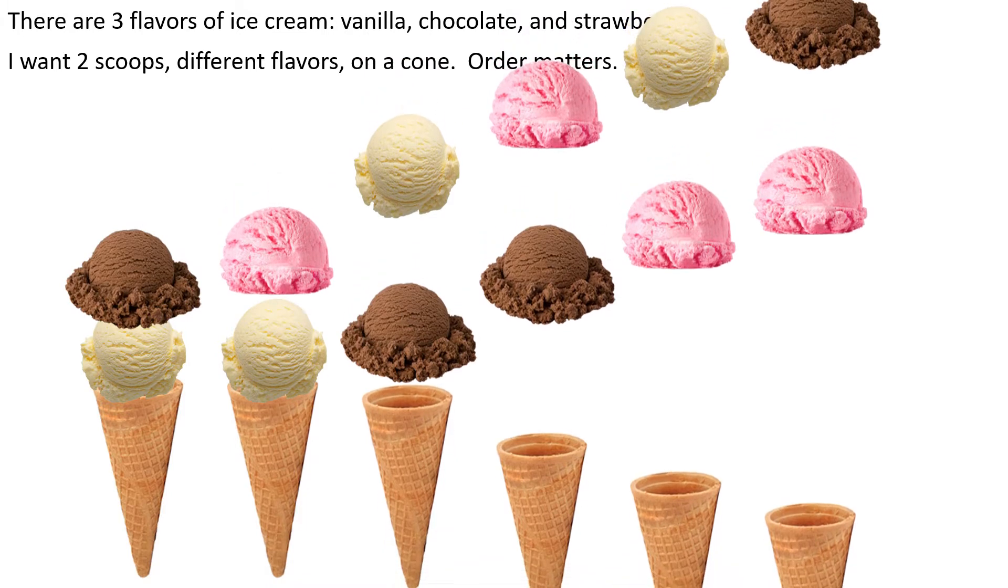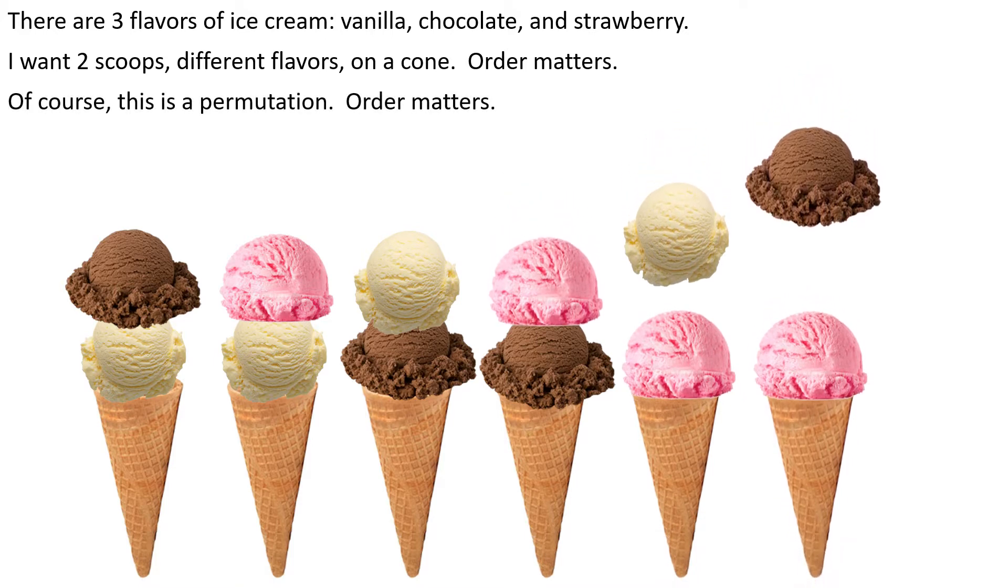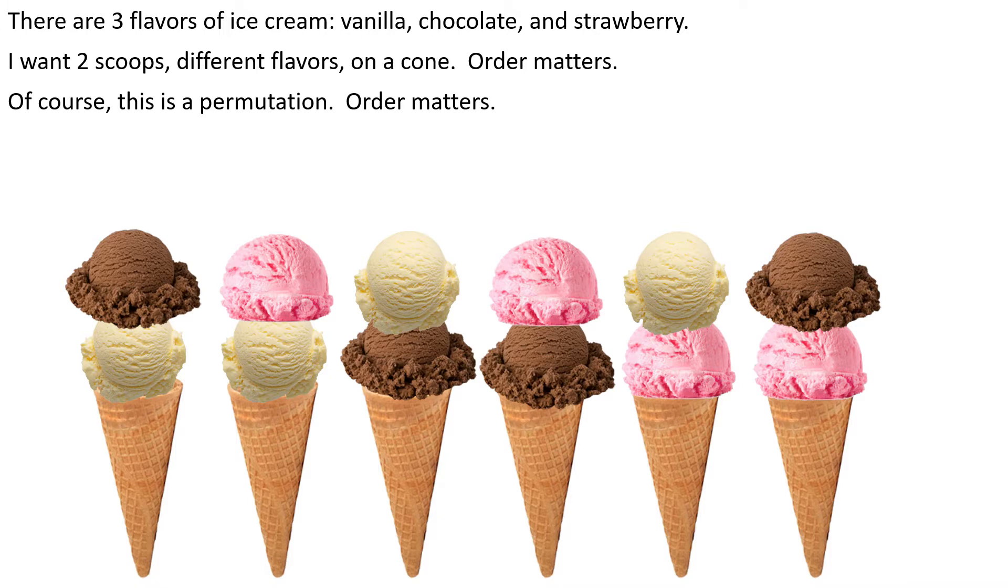All right, so if I look at those ice cream cones, if chocolate's on top of vanilla, I'm going to have the chocolate first. So these are permutations because the order matters. All right, and as we learned a previous lesson, if I've got three flavors and I want to pick two of them, we've got three factorial over three minus two factorial. So I've got three factorial over one factorial, so I've just got six, right? Divided by one is not going to do anything.